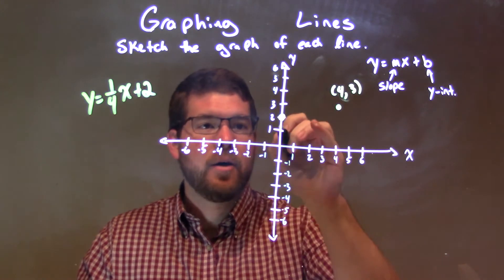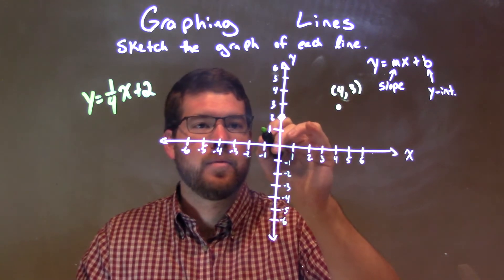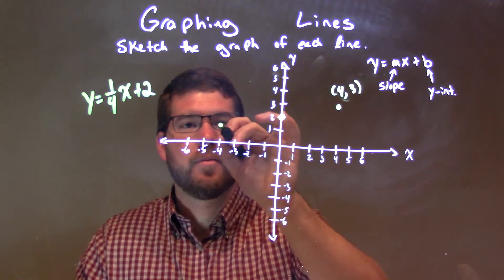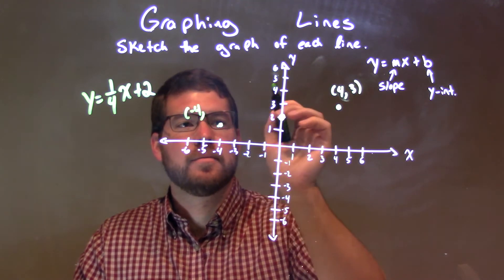We can also go down 1 to the left 4 units if you want. So down 1. 1, 2, 3, 4. We have a point right here. And that would be at negative 4 comma 1.